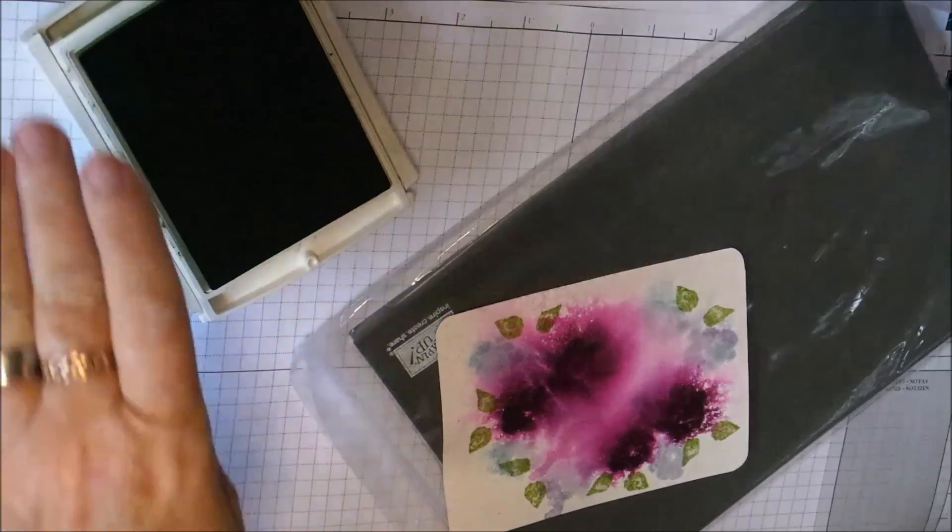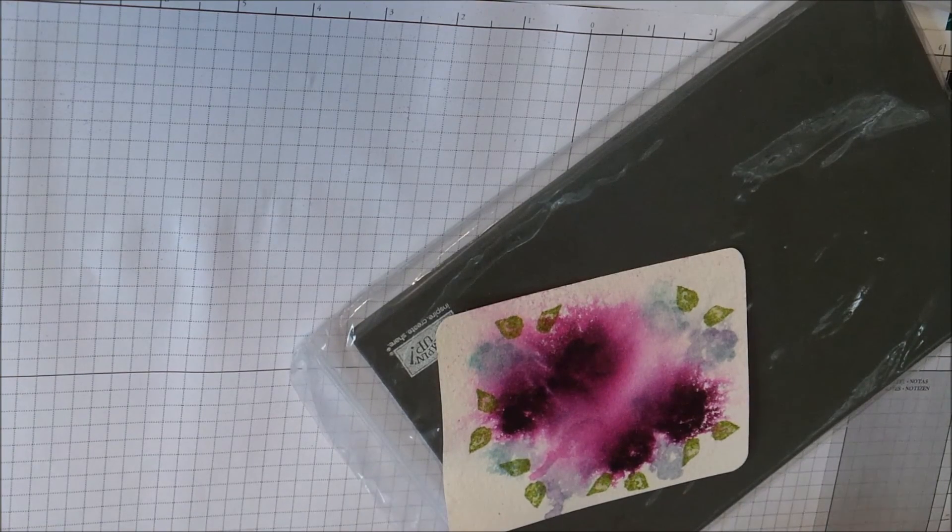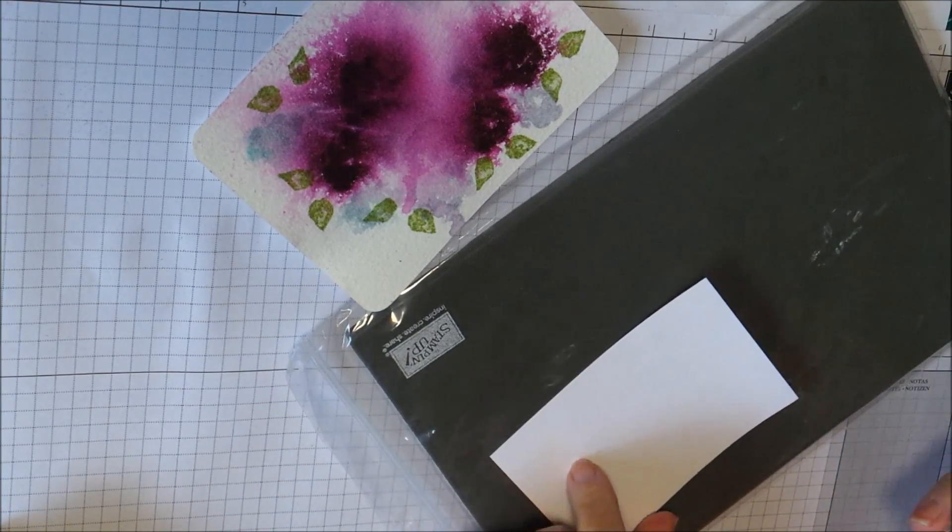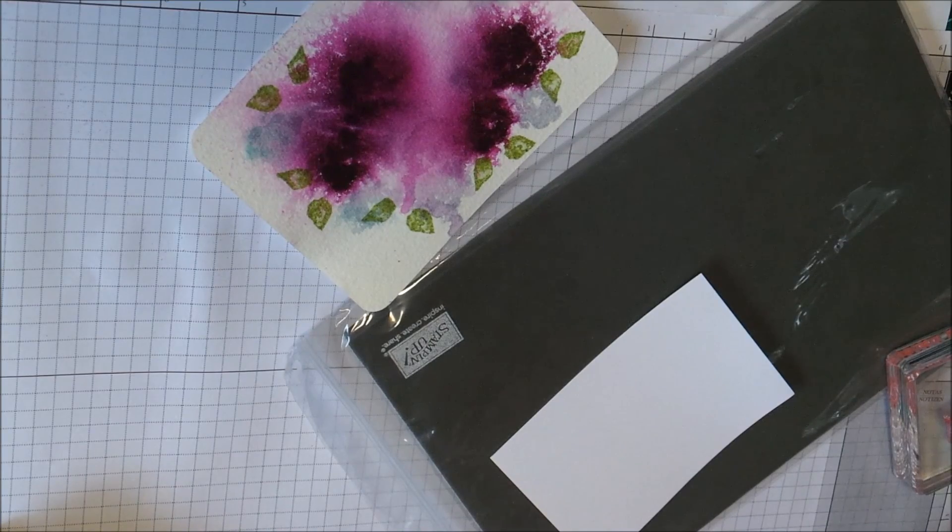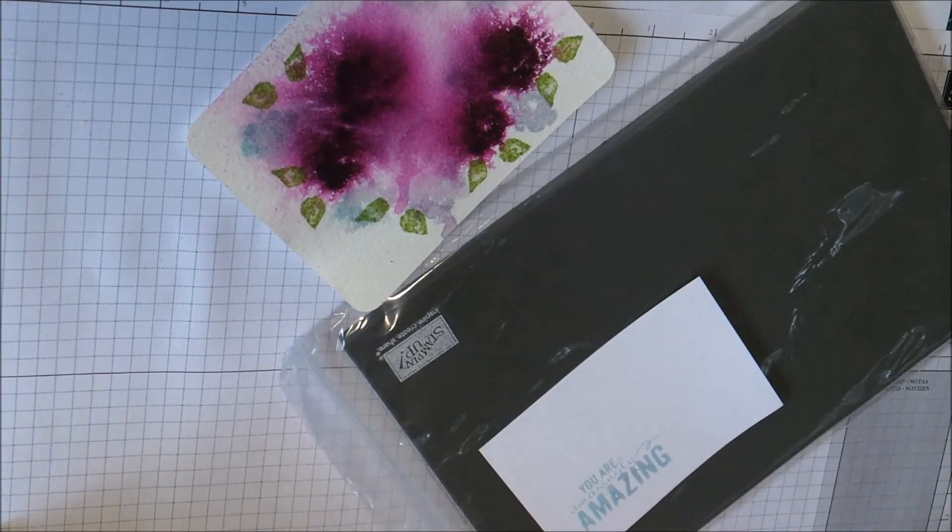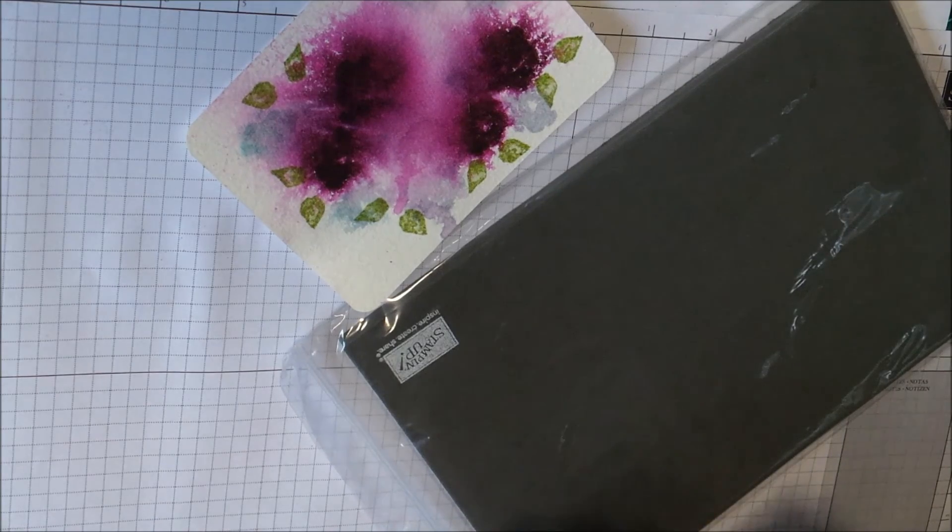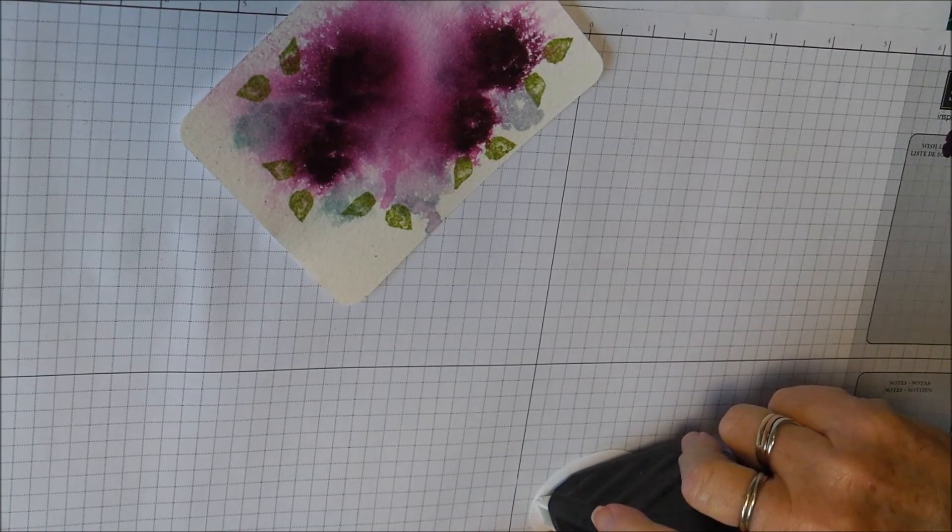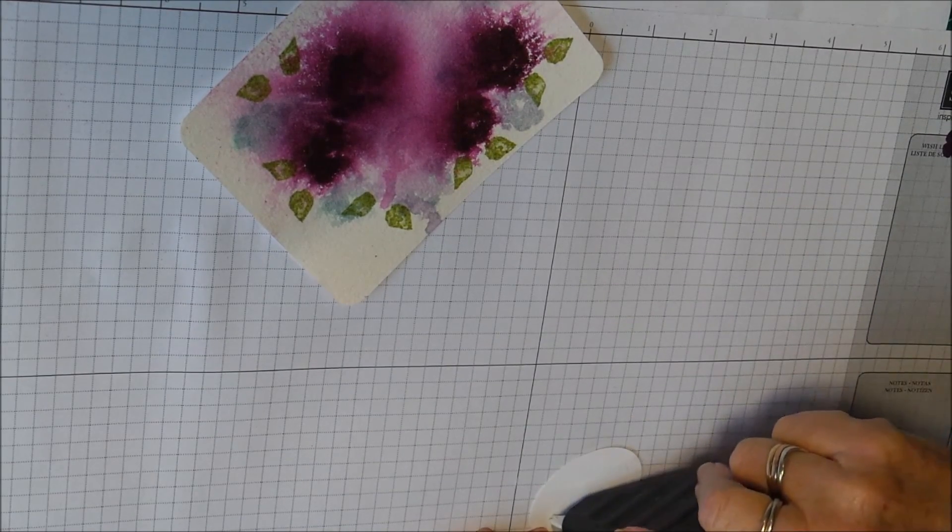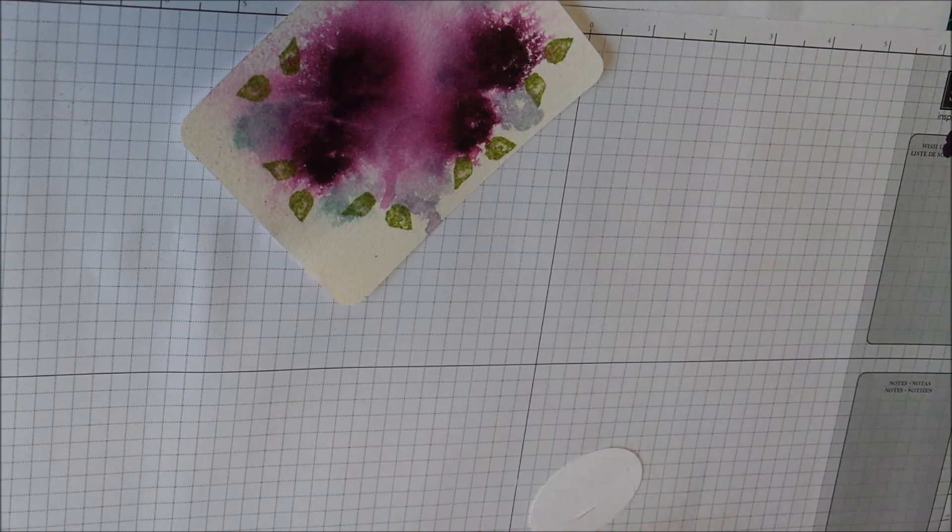All right so really that part of the card is finished and I'm just going to stamp it. I might do this one in Soft Sky just so it's a little different. Stamp that on there like that and I'm going to use the extra large oval punch to punch that out. I'll just put a bit of fast fuse and that should be about enough.